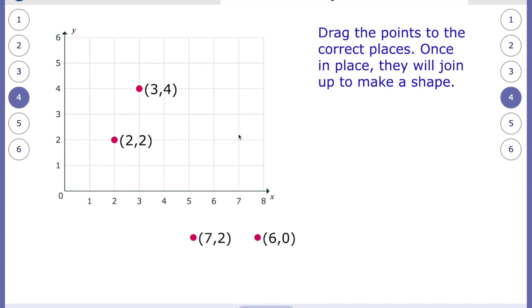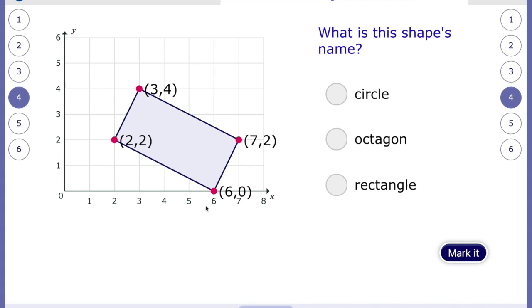Seven, two. There's seven, and there's two. So we're going to drag it to seven, two. And lastly, six, zero. And it sits on this line here, because here's six, and here's zero. And lovely observation. It's a circle, octagon, or rectangle. That's right. It's a rectangle. Well done.